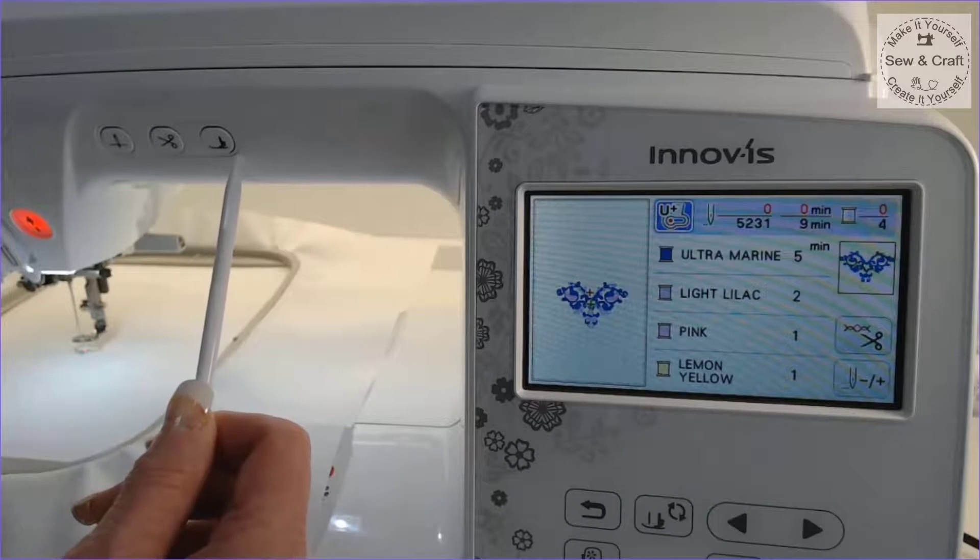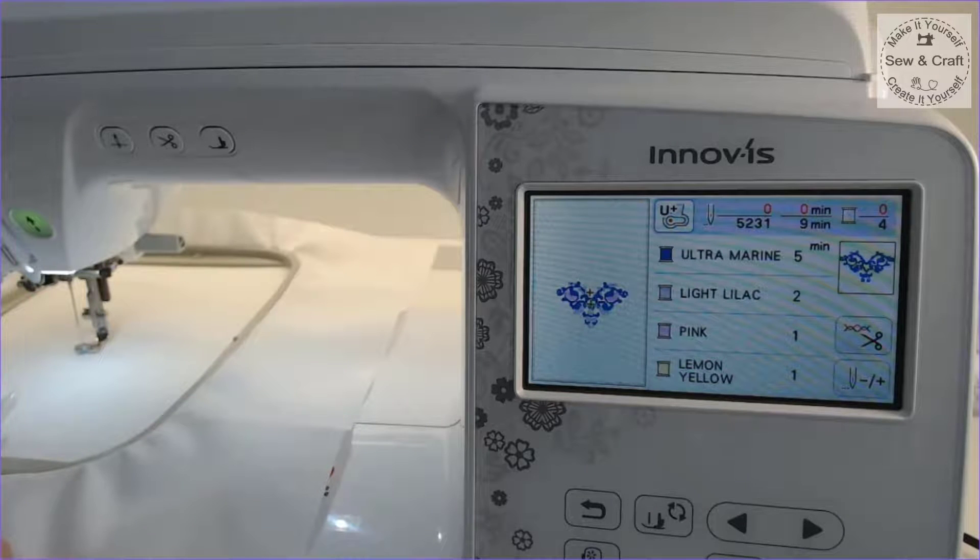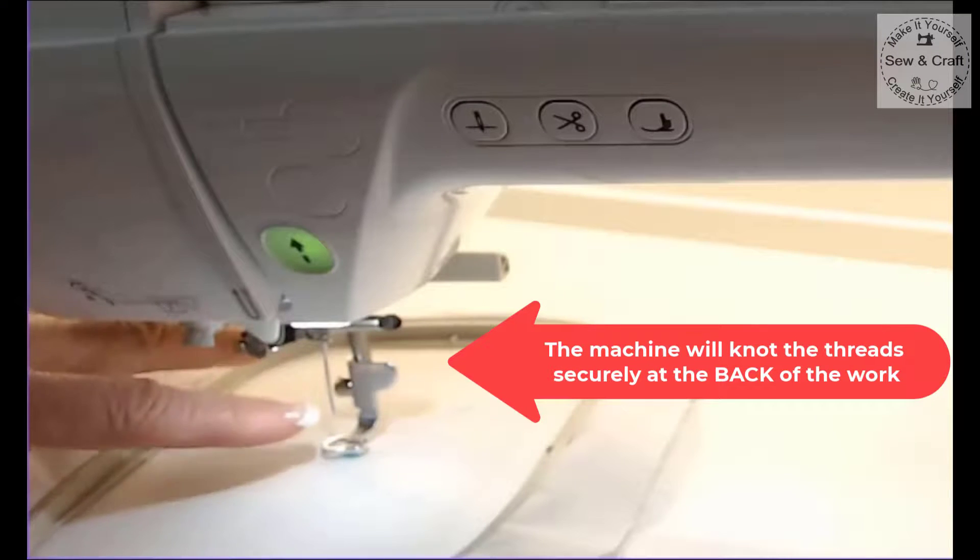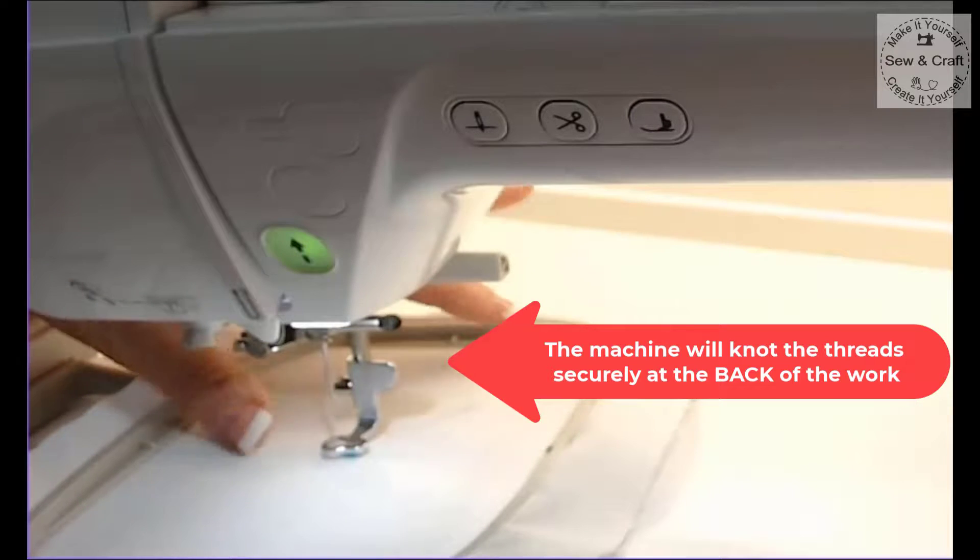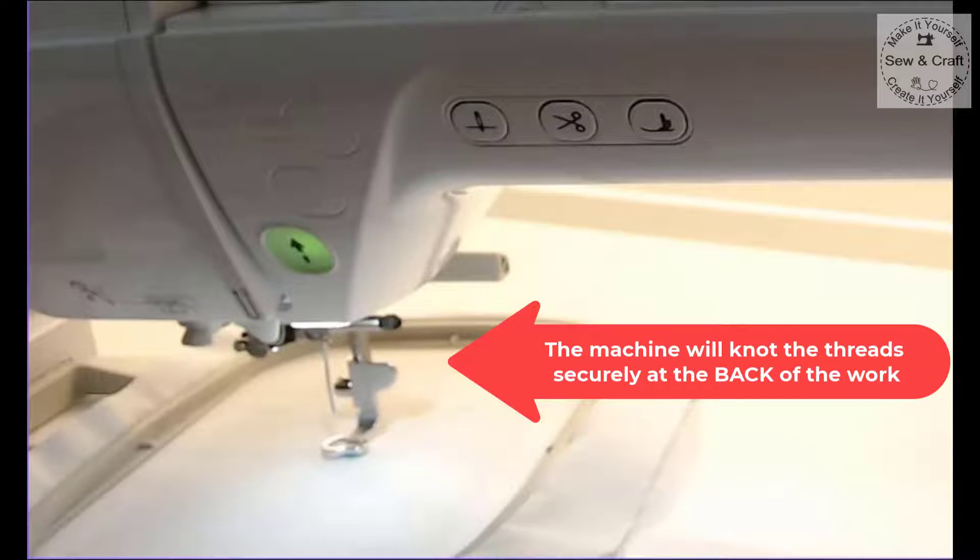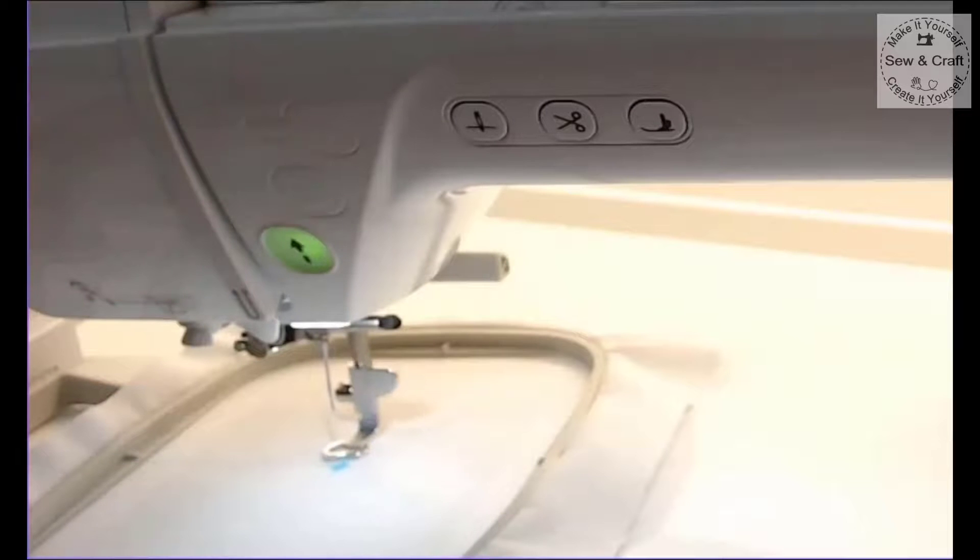Now that we're ready to embroider we'll simply lower the presser foot and press the little green start button. Just one other thing before I press the green button: once we've threaded the needle you'll see there's a long enough tail of thread so when the machine starts to embroider it's going to go down and link with the bobbin thread and cause a knot. That knot ensures your embroidery stitches don't come undone. So now I'm ready to press the green button and start embroidering.